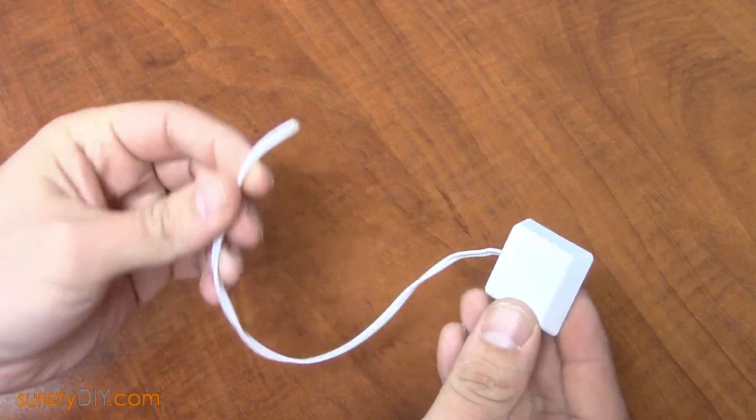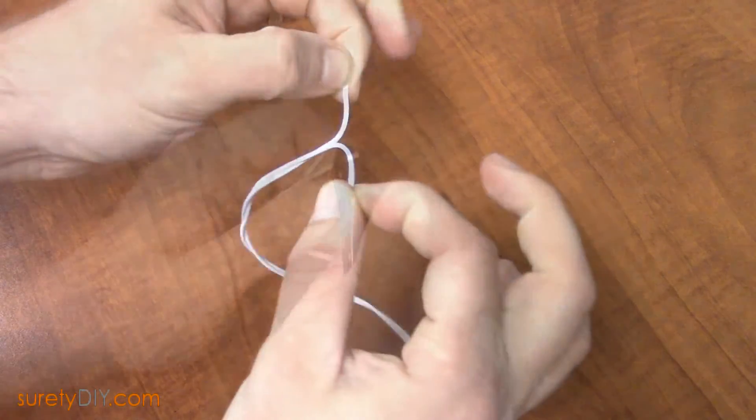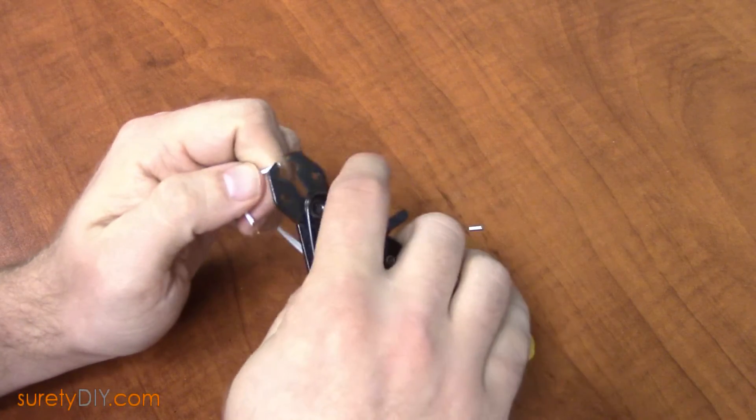Begin by cutting the shock sensor's wire to an appropriate length, and then strip back the ends. Strip away about a quarter inch of sheathing from the end of the wires.